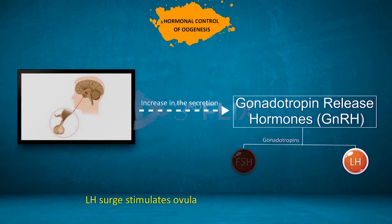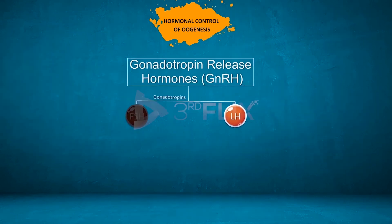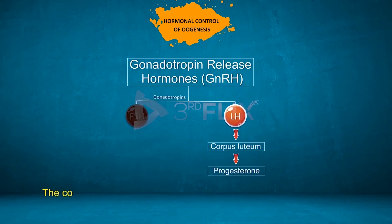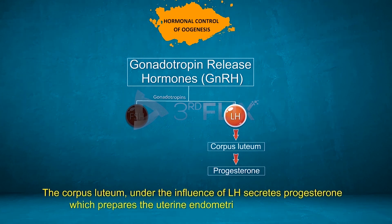LH surge stimulates ovulation. LH also stimulates the development of the corpus luteum. The corpus luteum, under the influence of LH, secretes progesterone, which prepares the uterine endometrium for implantation.